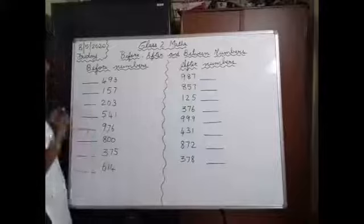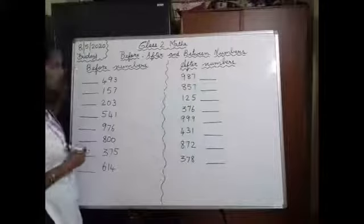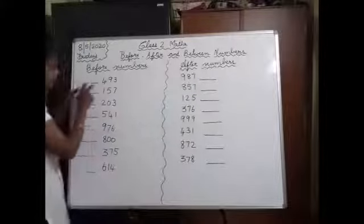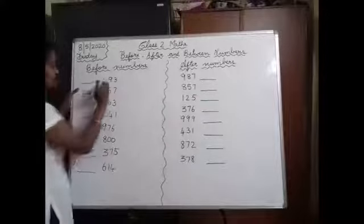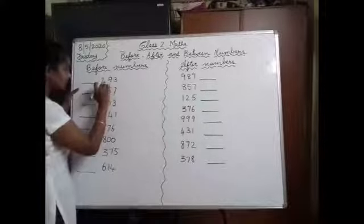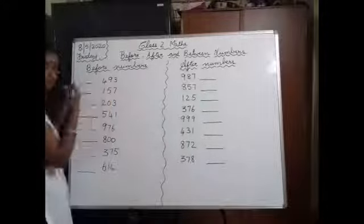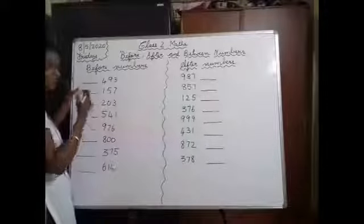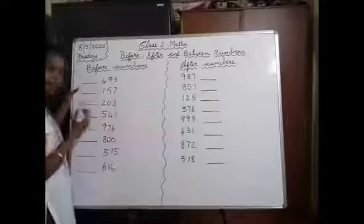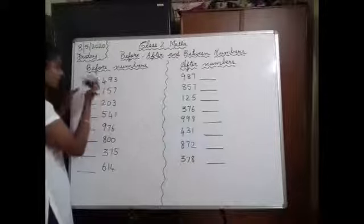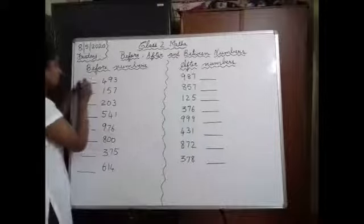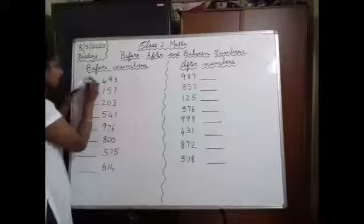First we will start with before numbers. The blank is before 493. Before 493, start saying from 491: 491, 492, 493. So before 493, which number did you say? 492.